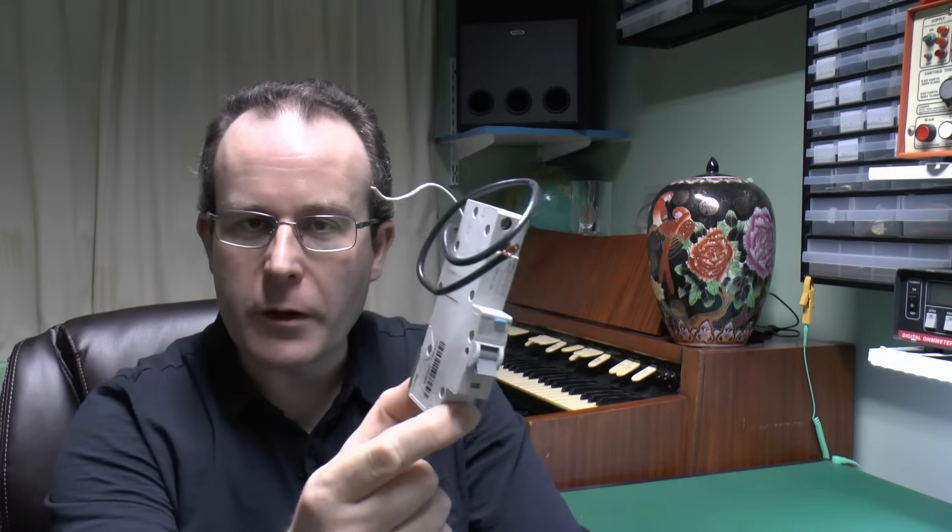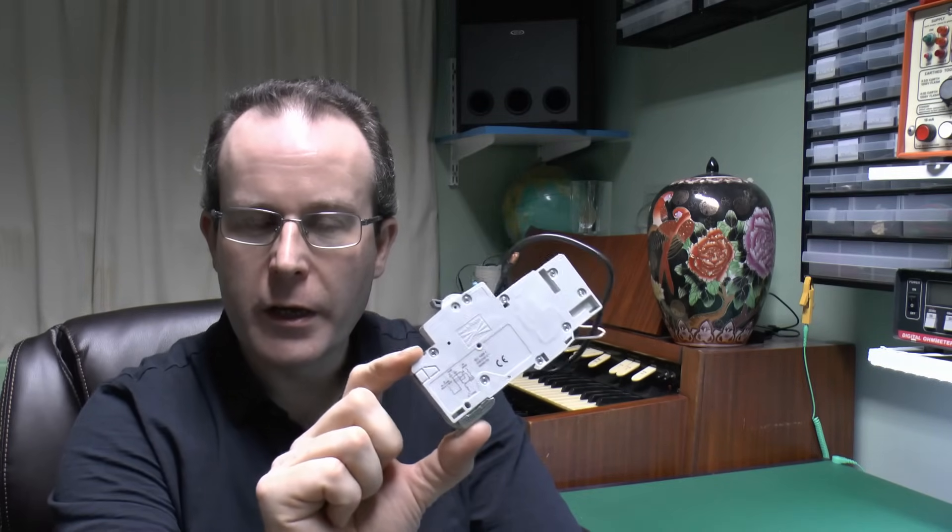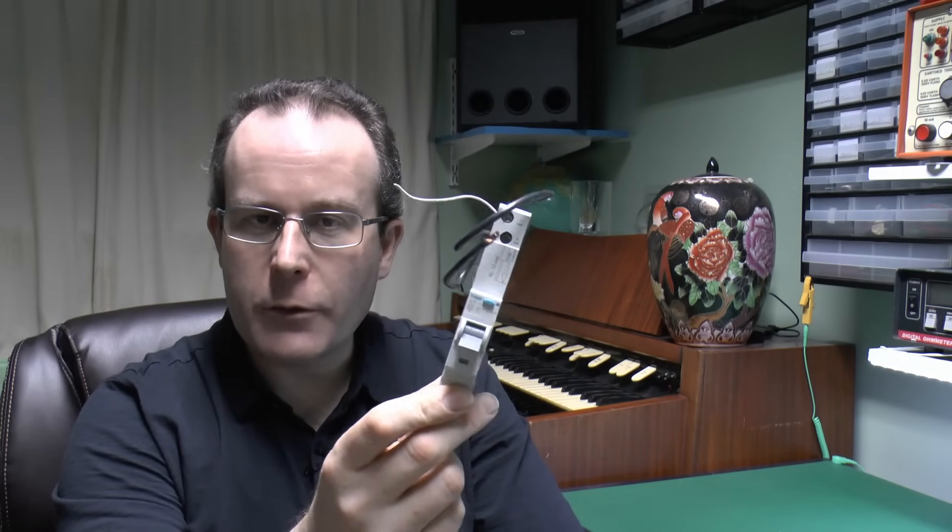So what we've got here is an actual RCBO just on its own, and it's a Hager one, the same as we saw in that consumer unit which was actually installed. So have a close look at this and also how this actually fits into a typical consumer unit.